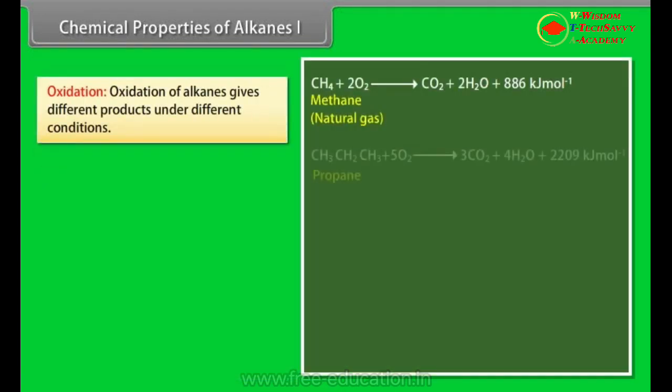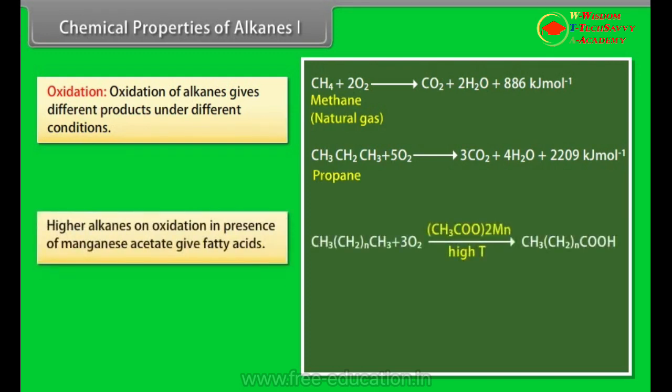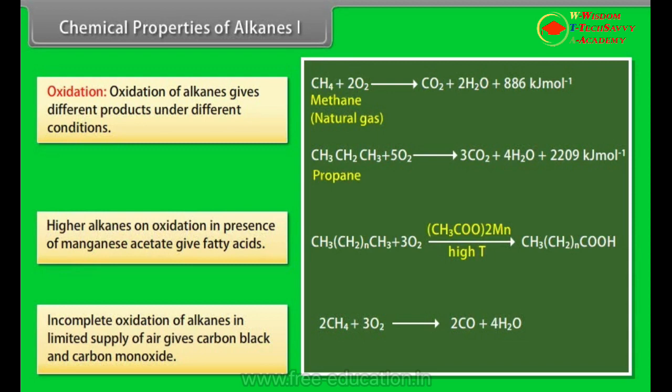Oxidation: Oxidation of alkanes gives different products under different conditions. Alkanes are heating in the presence of air or dioxygen are completely oxidized to carbon dioxide and water with the evolution of large amount of heat. Higher alkanes on oxidation in presence of manganese acetate give fatty acids. Incomplete oxidation of alkanes in limited supply of air gives carbon black and carbon monoxide. 2CH4 + 3O2 gives 2CO + 4H2O. CH4 + O2 gives C + 2H2O.